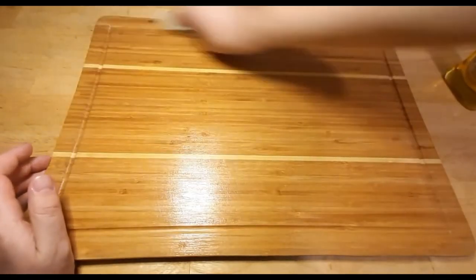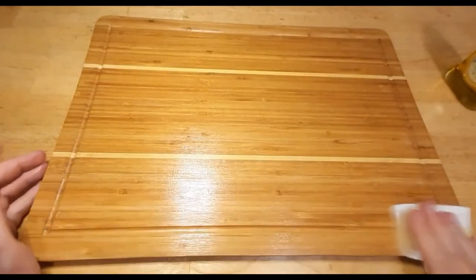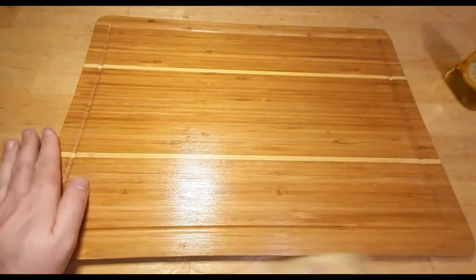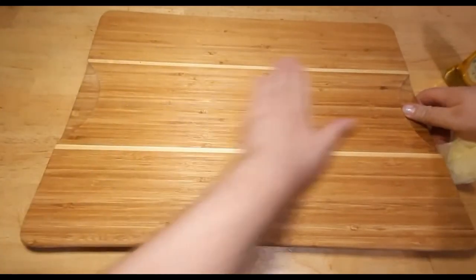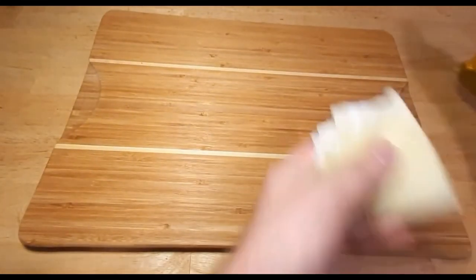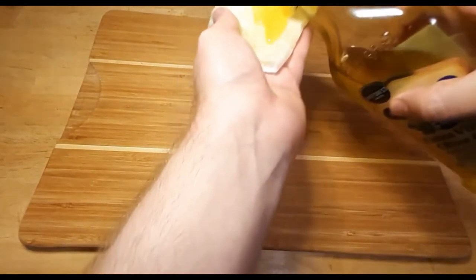Allow the oil to penetrate the surface for about 20 to 30 minutes. After the oil has had time to penetrate, use a clean cloth to wipe off any excess oil from the board's surface. This step is important to avoid an oily residue on your food.